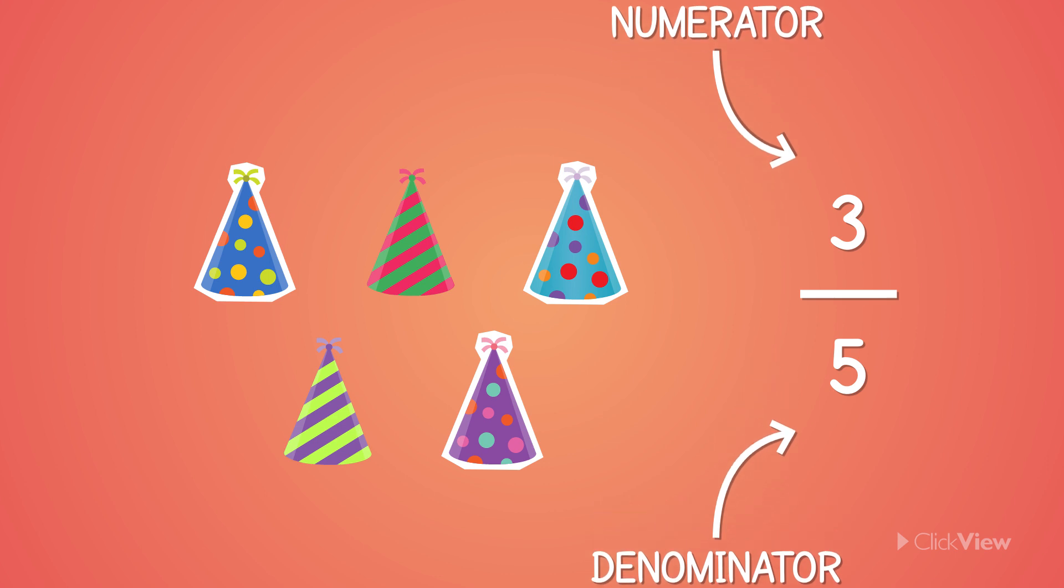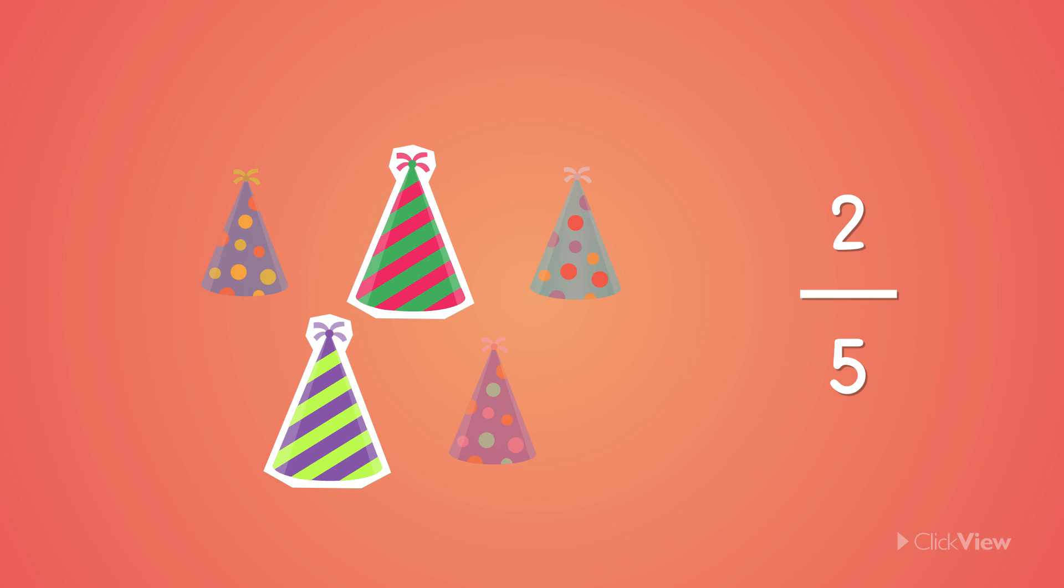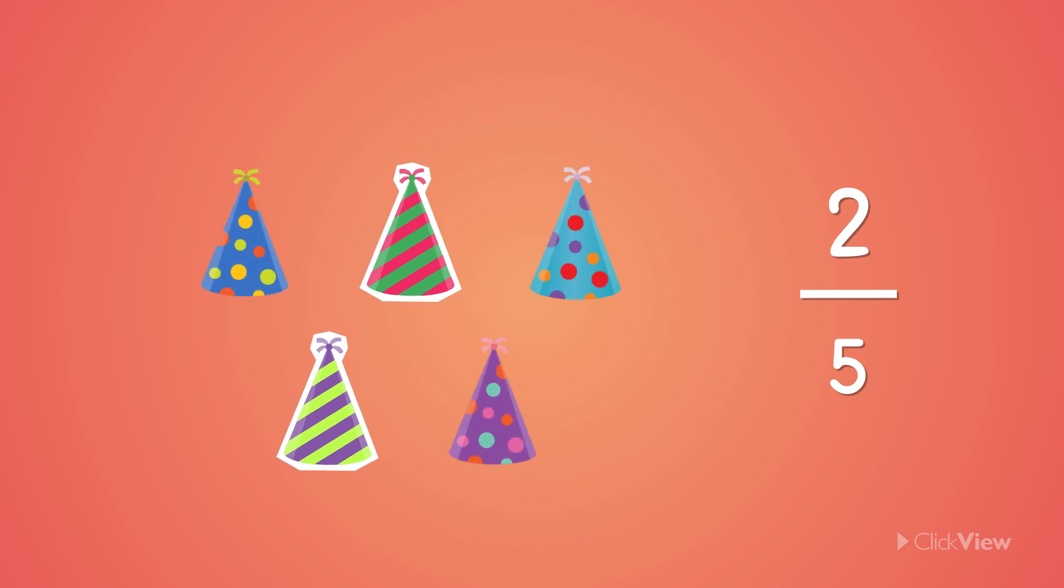We write this as three over five. It can also be said as three-fifths. How many party hats have stripes? Two. This can be written as two over five and said as two-fifths.